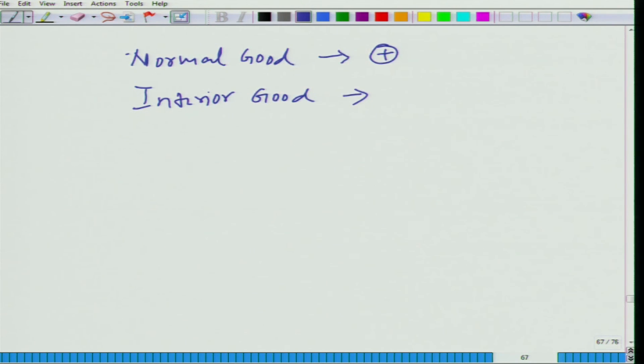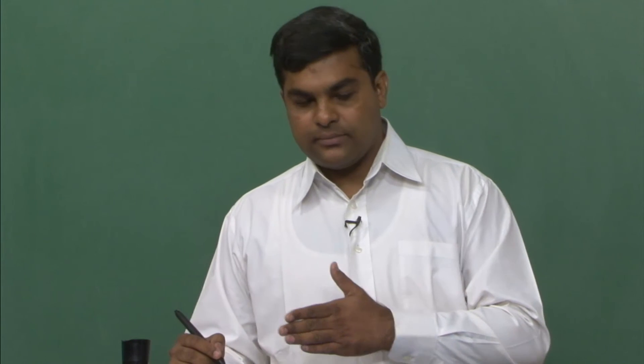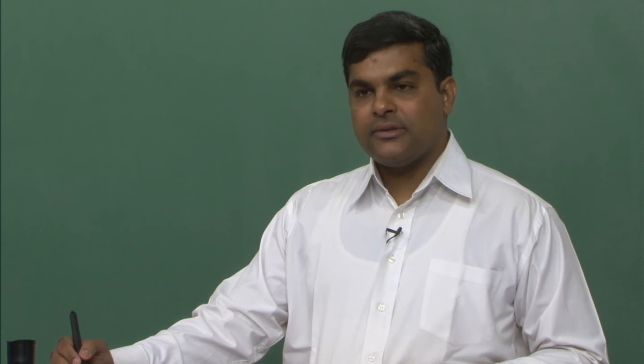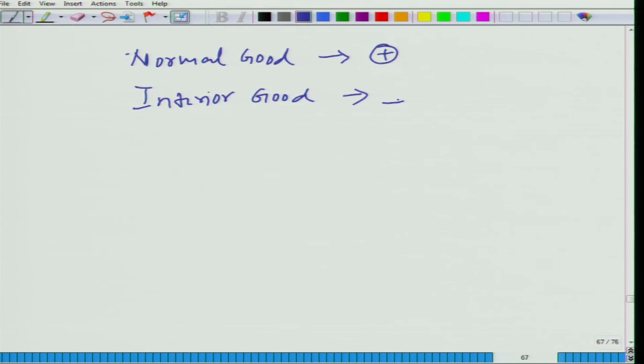Again also here when we are talking about income elasticity of demand, what we are talking about is shift in the demand curve. Similarly for inferior good what do we observe? Negative. Negative. Negative. Income goes up, you consume less of that particular item. Negative.